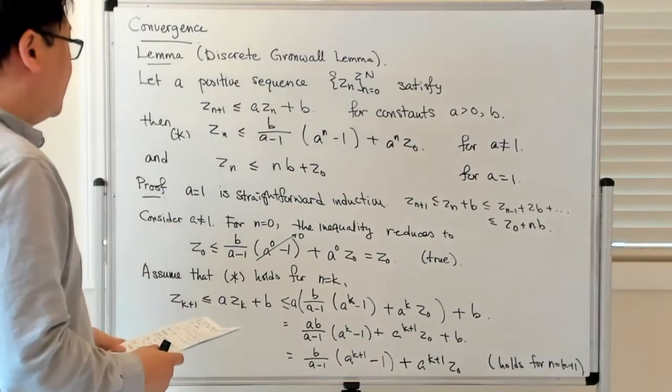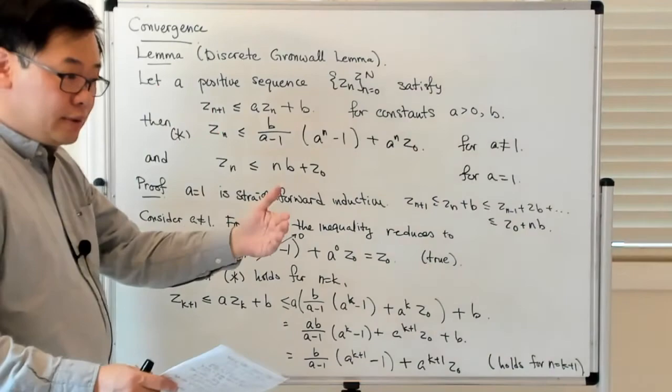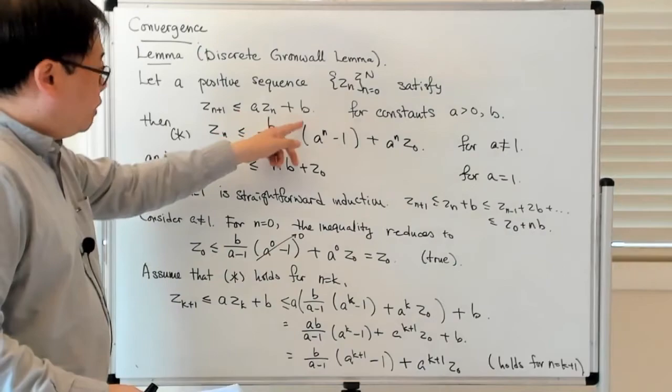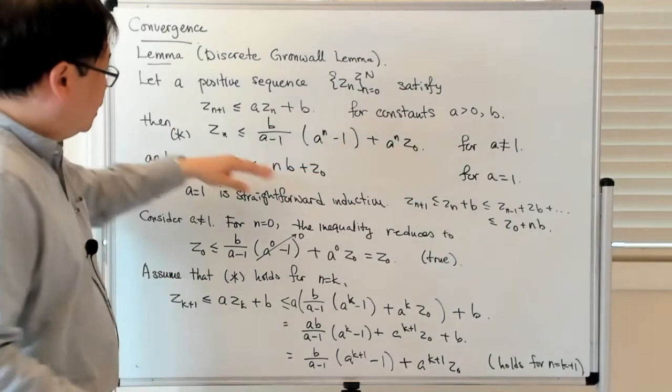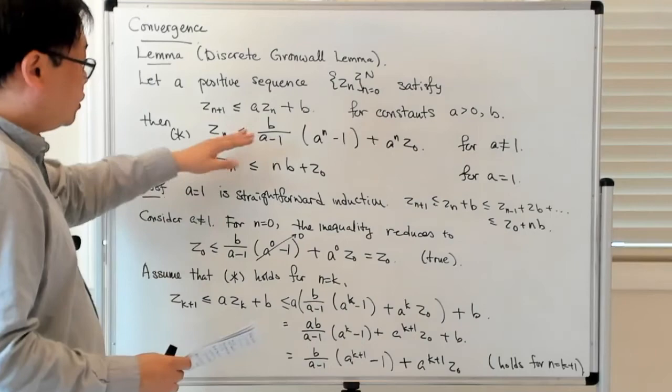This is what is called the discrete Gronwall lemma. It allows you to say that if you can relate the error at the new step in terms of the error of the old step by amplifying the error at the previous step plus adding a new source error, then the total error at the very end satisfies this kind of inequality.